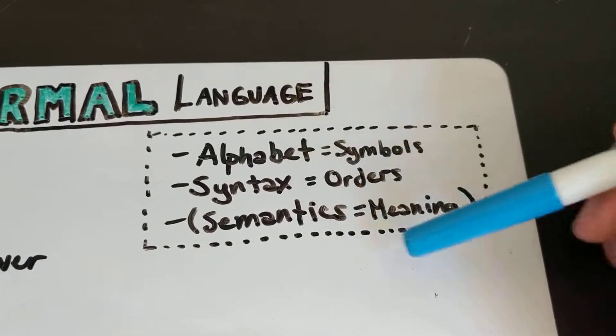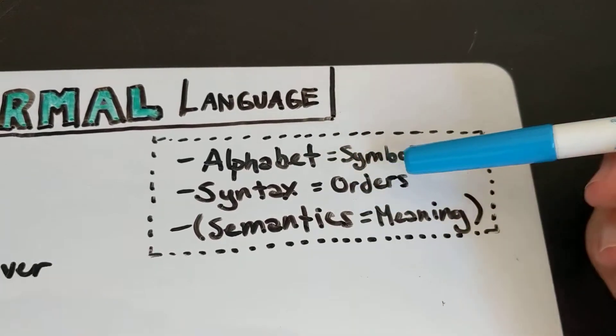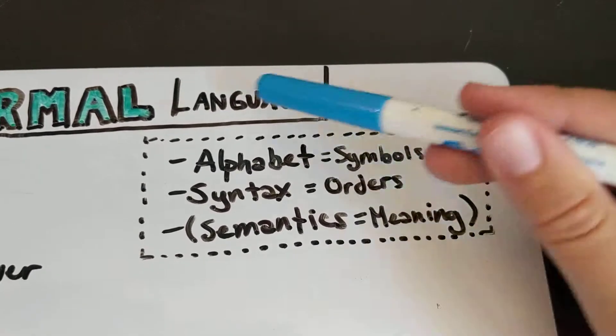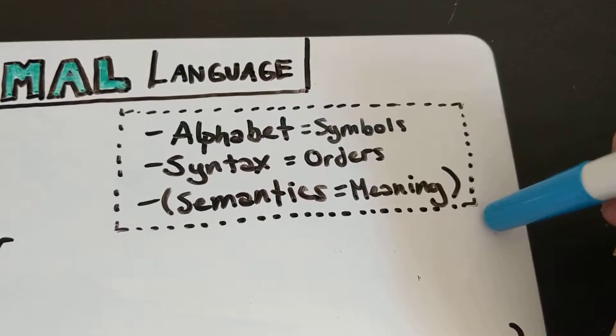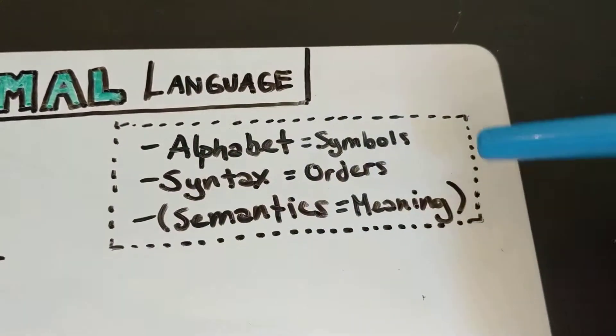And possibly, though not necessarily, a semantics, which gives deeper meaning to those syntactically well-formed expressions. And that's essentially what a formal language is, but we're going to get a lot more formal, a lot more fancy about the way that we talk about these things.